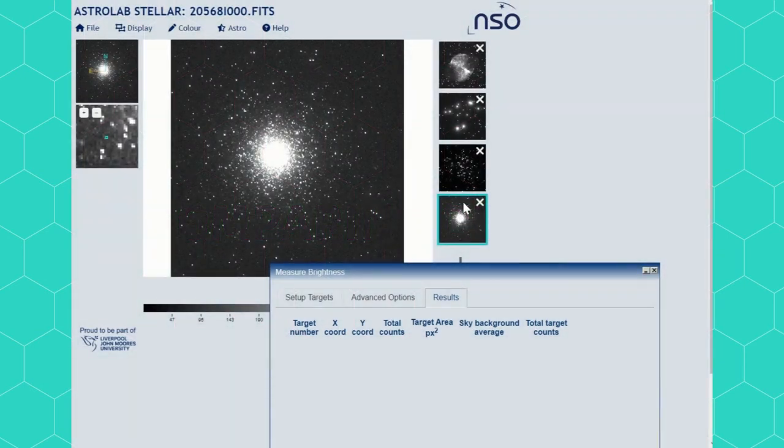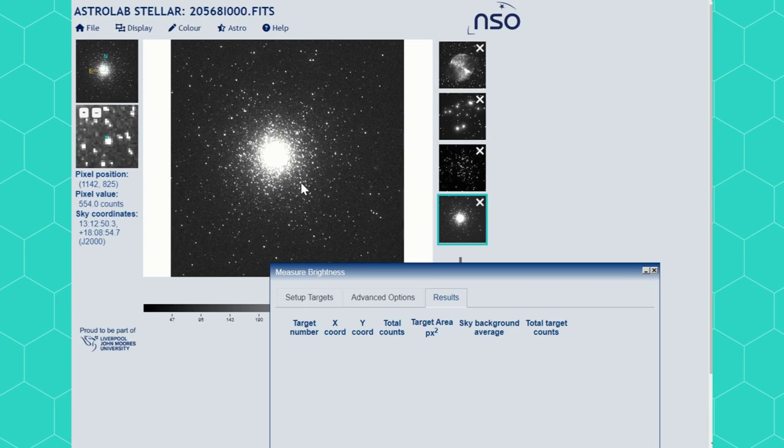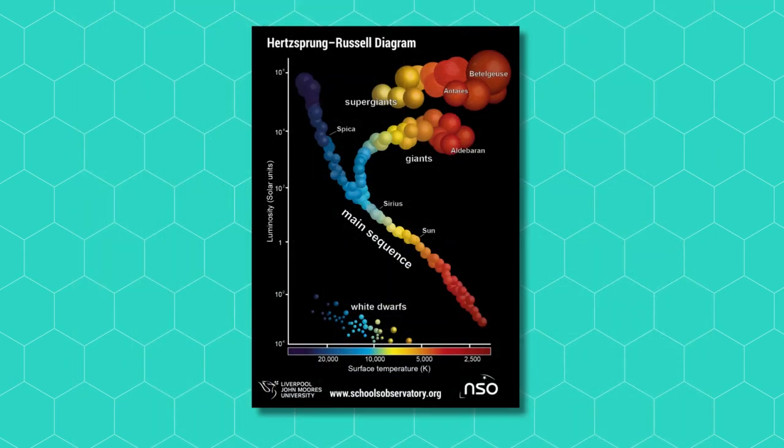We can look at another image with many stars in, like a globular cluster. Here we can measure the brightness of many stars in the same object and compare them. You might want to do this if you're trying to create a Hertzsprung-Russell diagram.